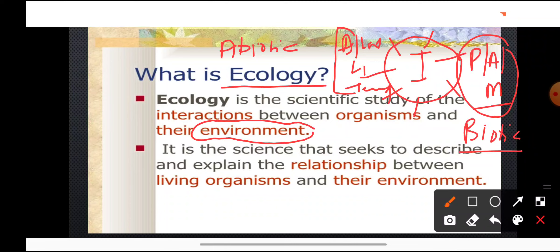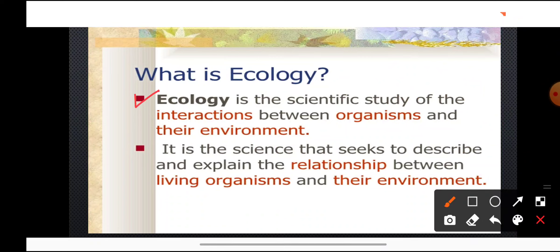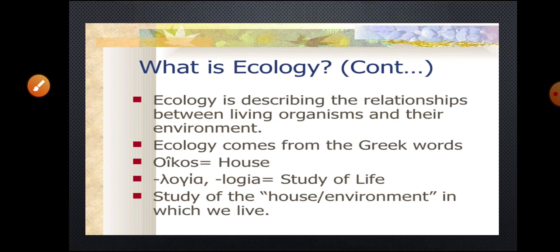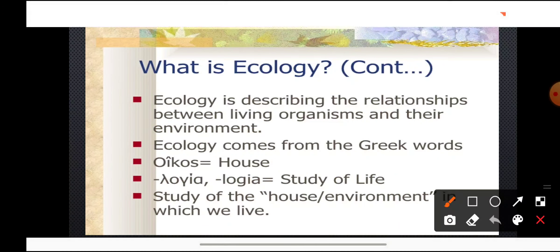We also need abiotic factors for our survival. Now, what is ecology? Ecology is the branch of biology which deals with the study of interactions between the organism and the environment — how we interact with the various biotic and abiotic factors. Studying that is included in ecology. So it is the science that seeks to describe and explain the relationship between the living organisms and their environment.